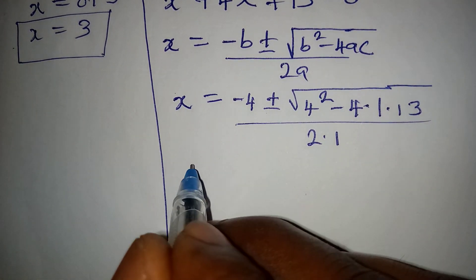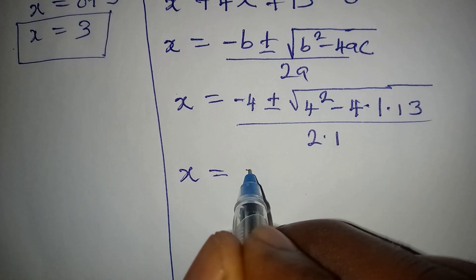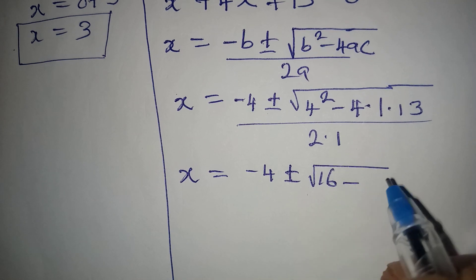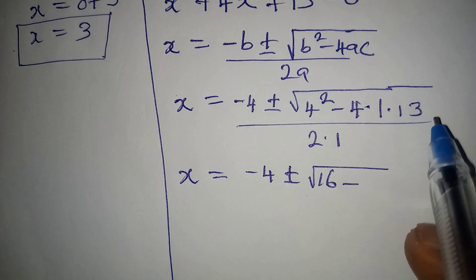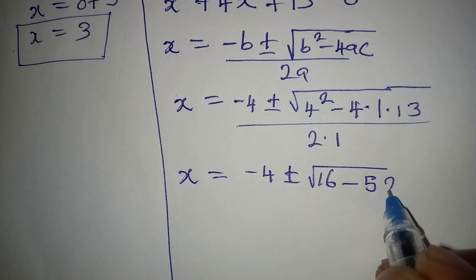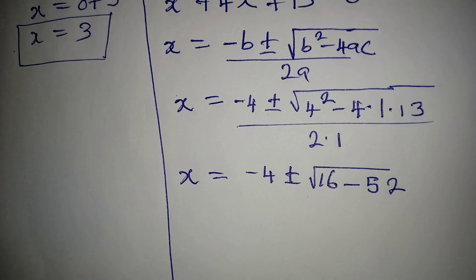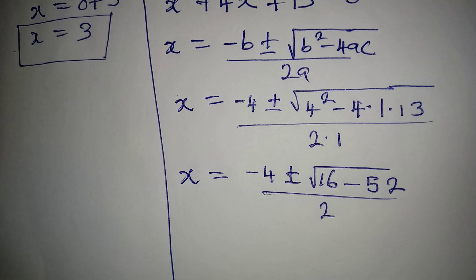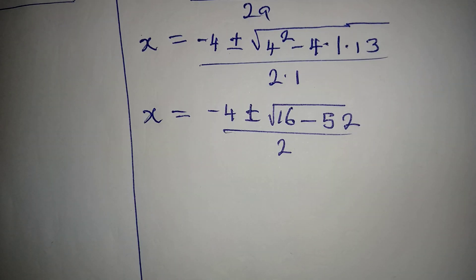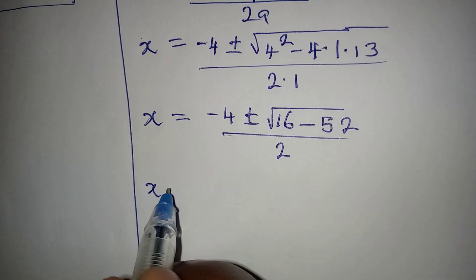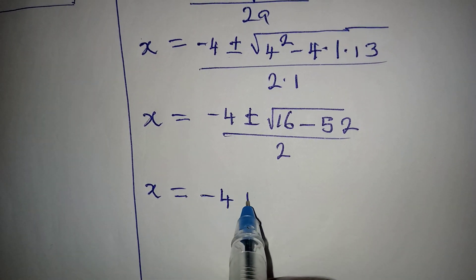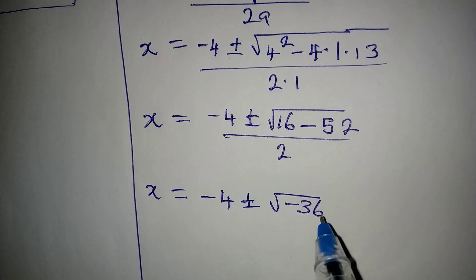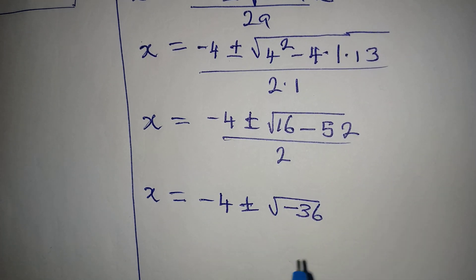Continuing, x = (-4 ± √(16 - 52)) / 2. Since 4 times 13 equals 52, we get √(16 - 52) = √(-36). So x = (-4 ± √(-36)) / 2.